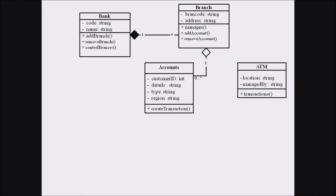The fourth class is ATM. Its private attributes are location and managed by, and it has a public method — transaction. The relationship between ATM and Branch is aggregation, with the multiplicity factor being one branch may have zero to many ATMs.